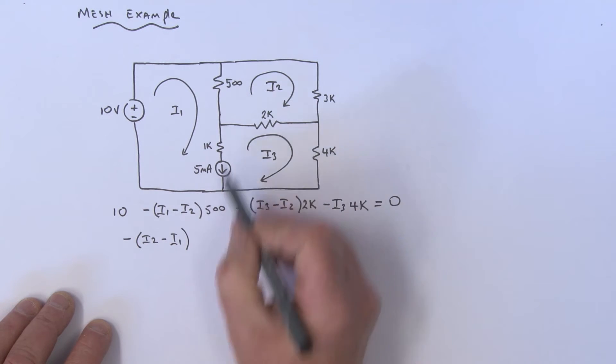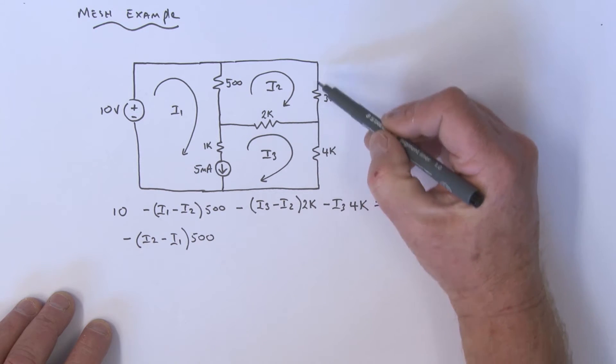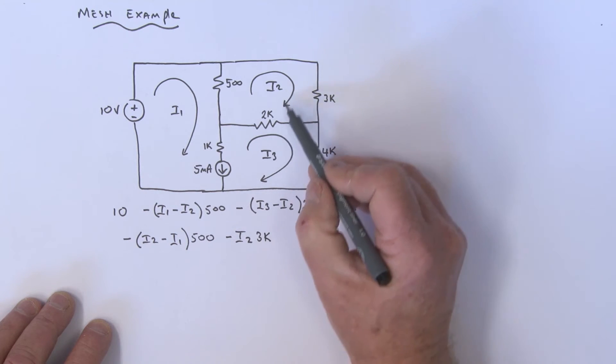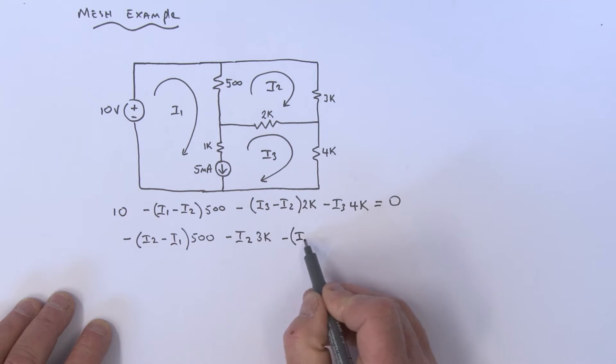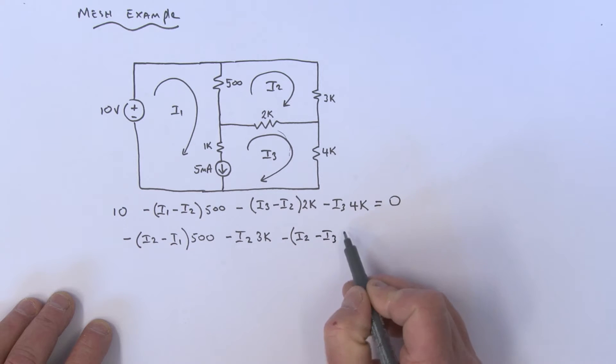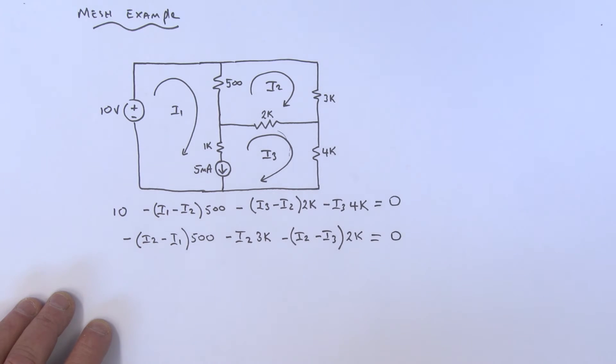Then we've got minus (I2 - I3) times 2k. We're back to the beginning, so all of that equals zero. Now we've got two mesh current equations.